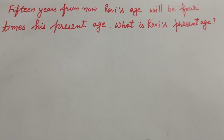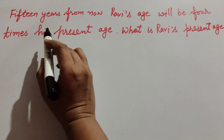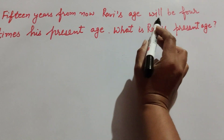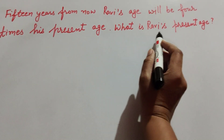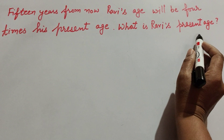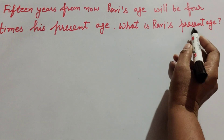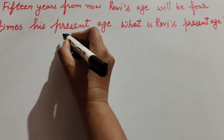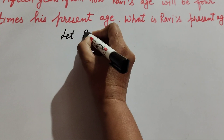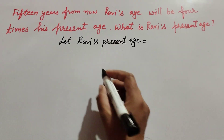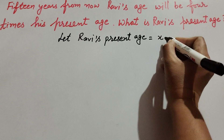Hello friends, welcome to my channel. In this video we discuss: 15 years from now, Ravi's age will be 4 times his present age. What is Ravi's present age? To find Ravi's present age, we suppose Ravi's present age is x.